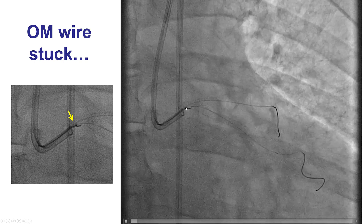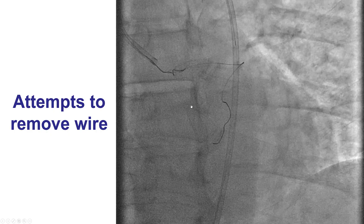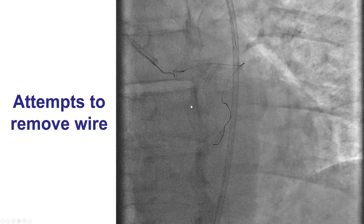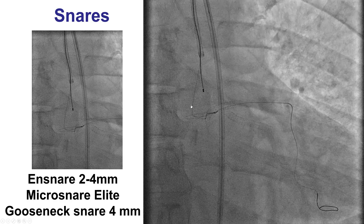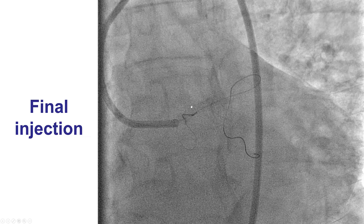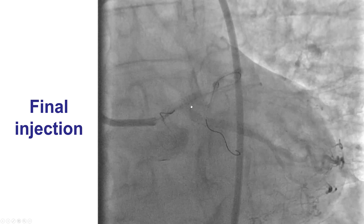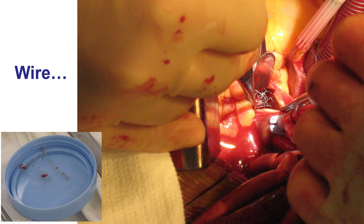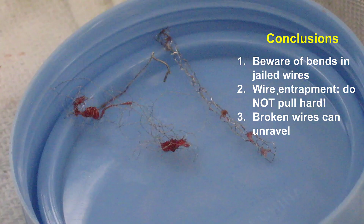When this happened, there was an entrapped wire in the left main stem. Several attempts were made using snares, but despite the pulling, the guidewire fractured. We kept trying with different snares but were unable to remove it. The patient went to surgery, which was fortunate — because when the surgeon opened the aorta, there was a metal coil extending all the way into the aorta, something we had not appreciated and likely caused by the use of snares. Had this been left inside, serious harm would have resulted.